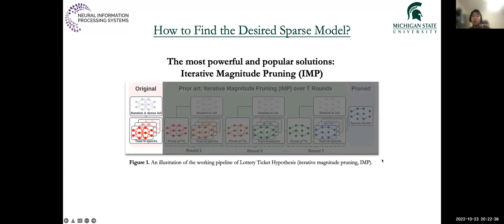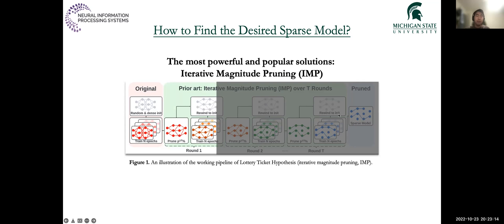Among the many powerful pruning methods, we can never miss one of the most significant and popular methods called iterative magnitude pruning, or in short, IMP. As its name suggests, IMP works in an iterative manner with several pruning-retraining rounds. It starts from some random model initializations, trains the model for several epochs, and then prunes a small portion of parameters with the least magnitudes. By repeating this procedure round by round, IMP iteratively reaches the target sparsity level by removing parameters with an exponentially decaying pruning ratio, as the illustration shows here.